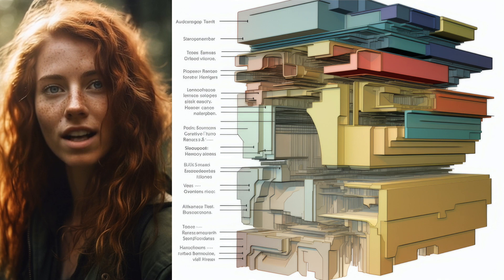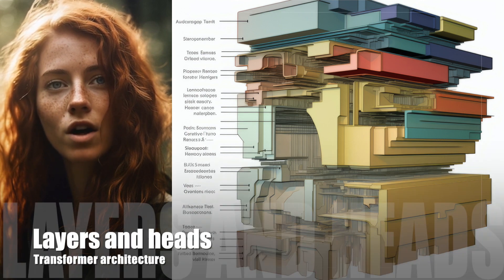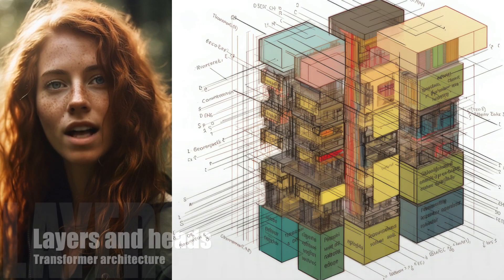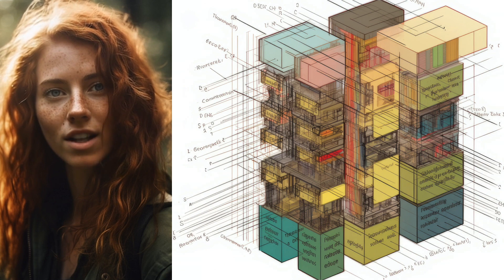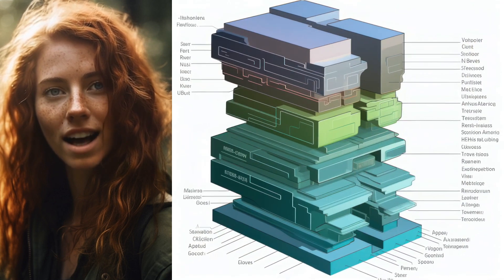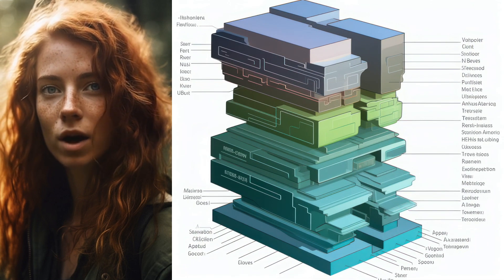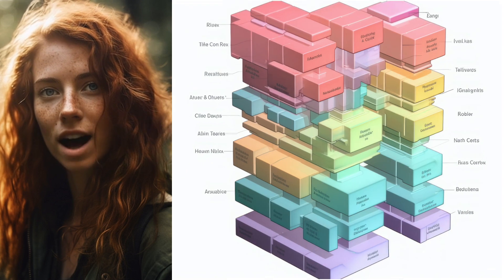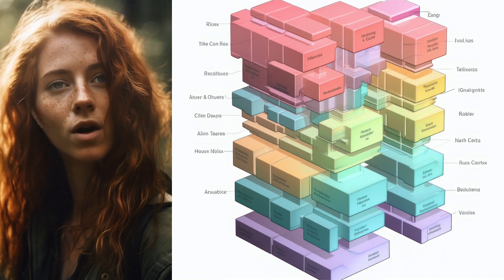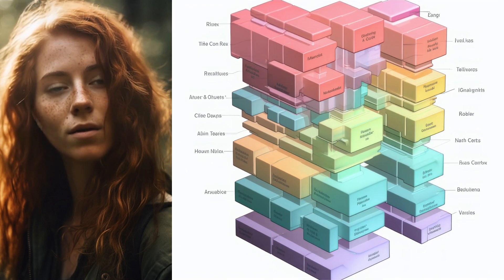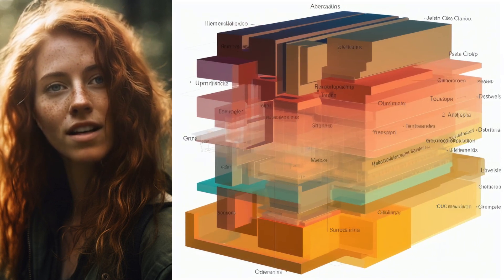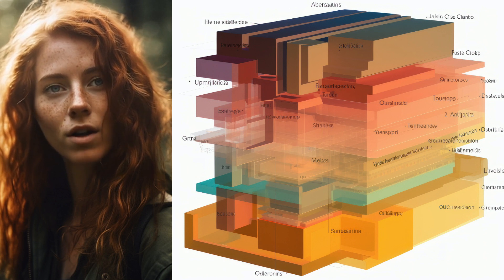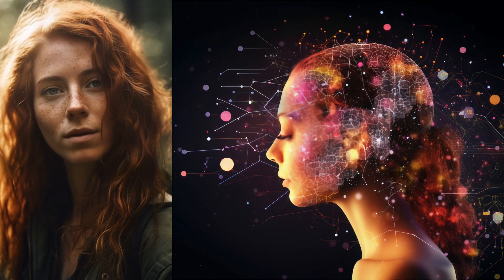Layers and heads: The transformer architecture consists of multiple layers, each with multiple attention heads. Each attention head processes the input independently, allowing the model to learn different aspects of the input data. The outputs of the attention heads are concatenated and passed through a feed-forward neural network.